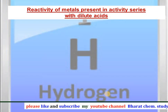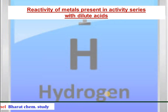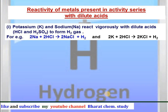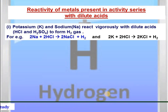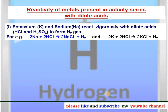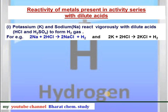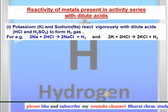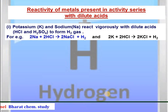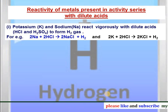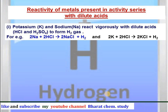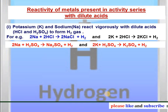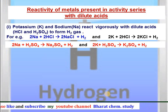The reactivity of metals present in the activity series with dilute acids — these are very important equations. First point: potassium and sodium react vigorously with dilute acids like HCl or dilute H2SO4 to form hydrogen gas. The equation: 2Na + 2HCl → 2NaCl + H2. Similarly, 2K + 2HCl → 2KCl + H2. Sodium and potassium on reaction with dilute sulfuric acid give sodium sulfate and potassium sulfate respectively, along with hydrogen gas.